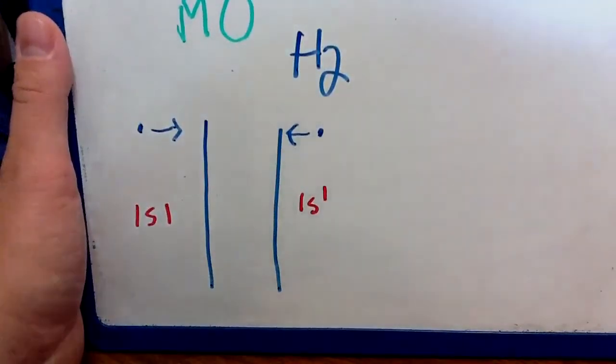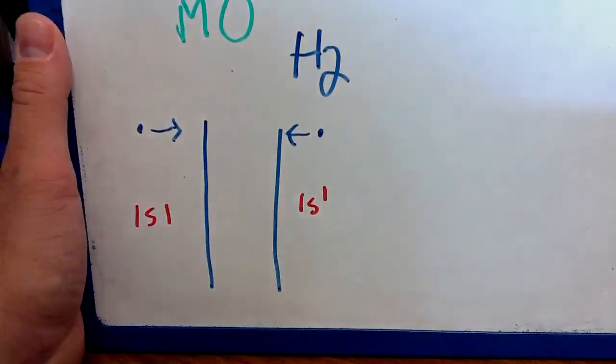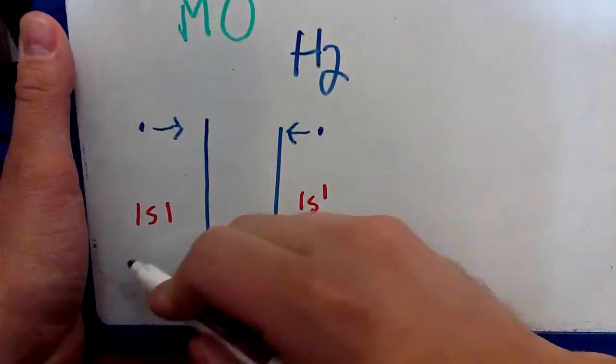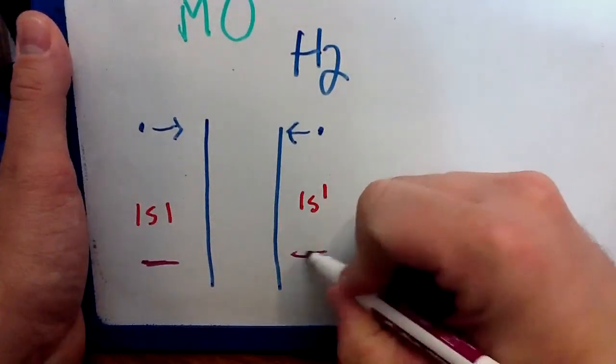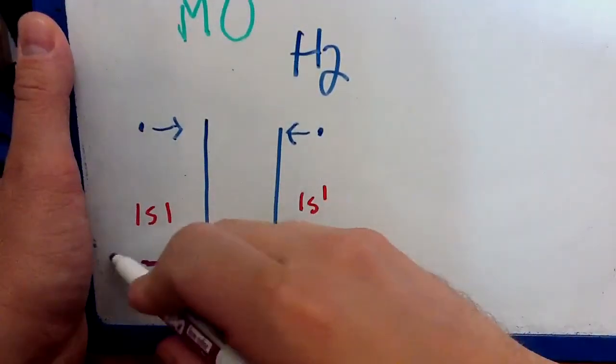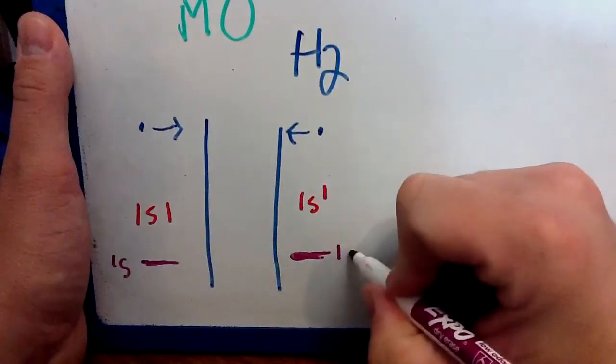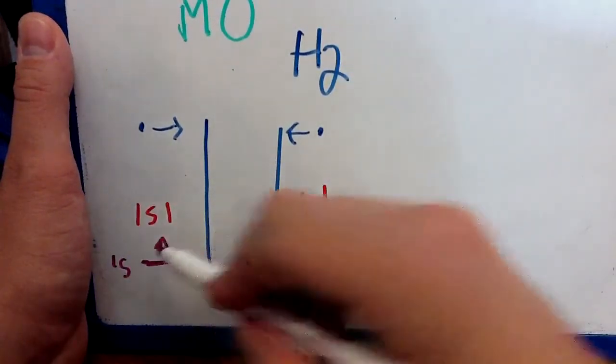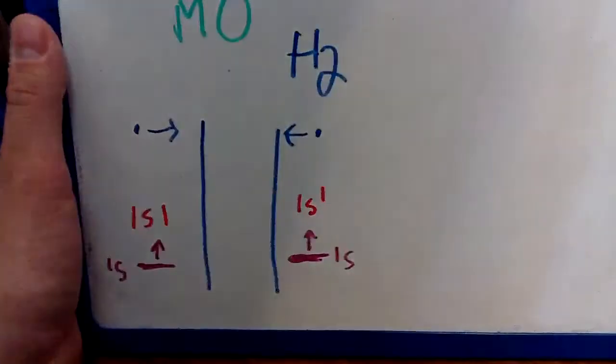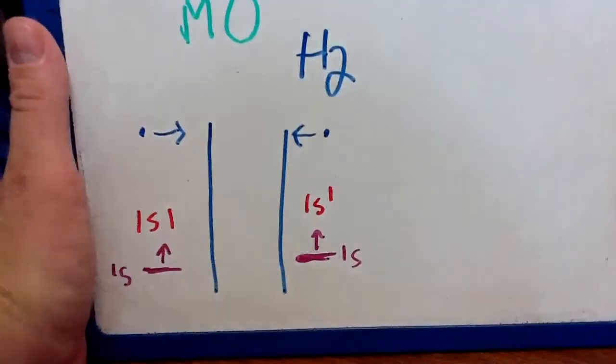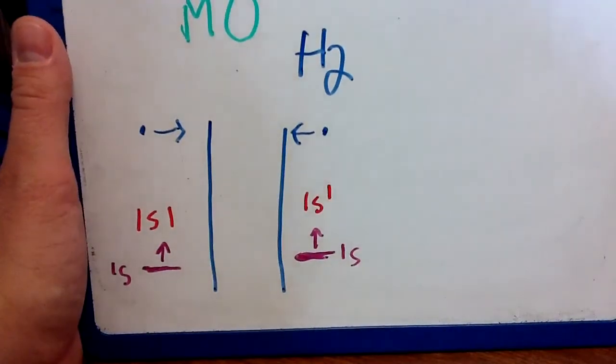It's just 1s1 and then 1s1. So I have one electron in the 1s orbital. I'm just going to go ahead and do an s here and an s here. So this is the 1s orbital, this is the 1s orbital, and I'll just put an electron here and an electron here, and we'll just say they're both spin up for now. It doesn't really matter too much.